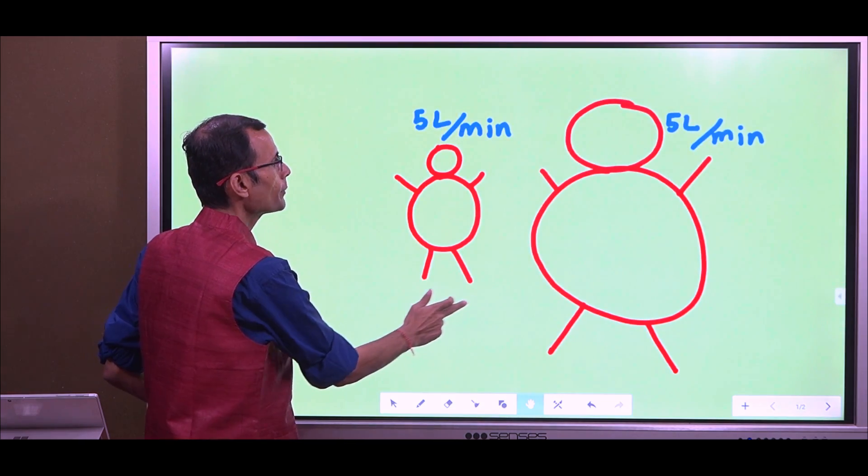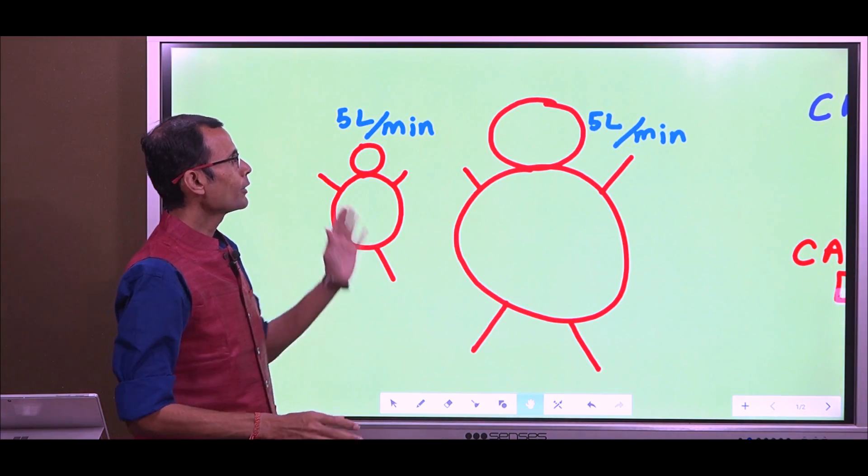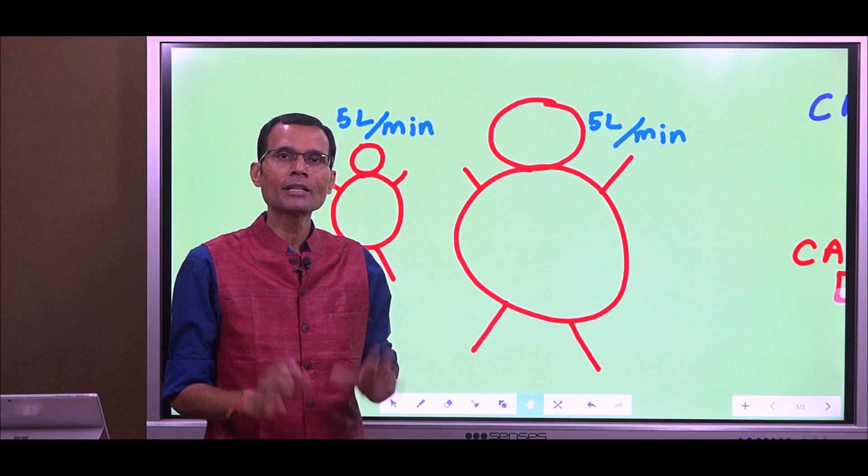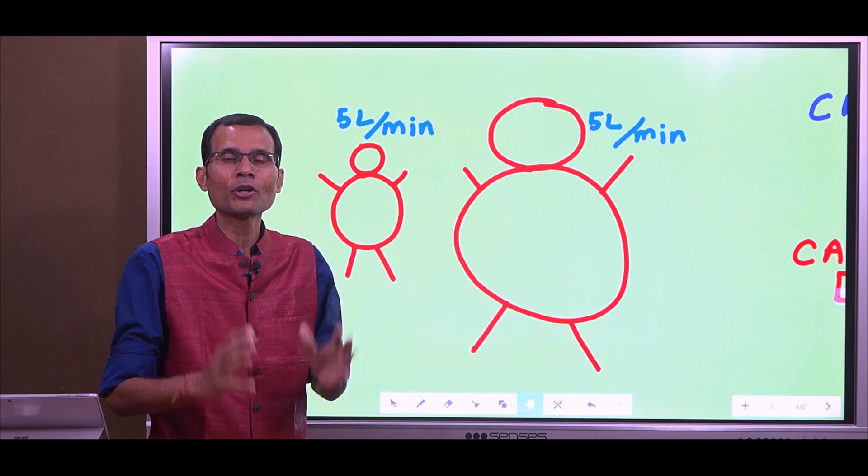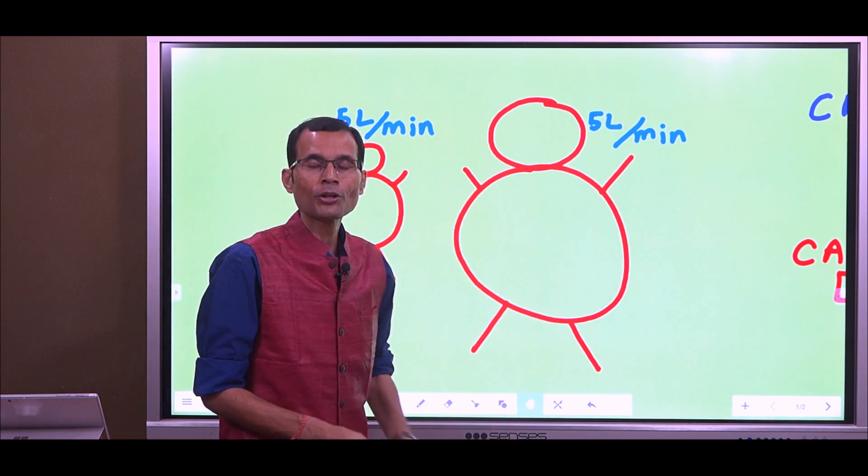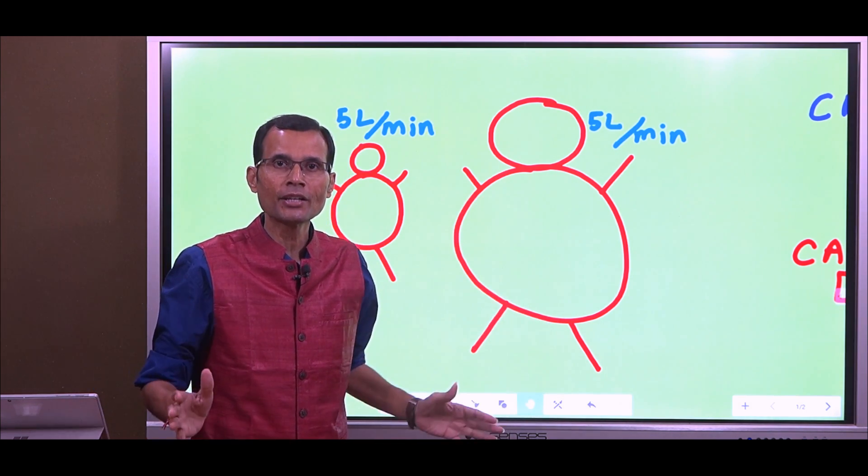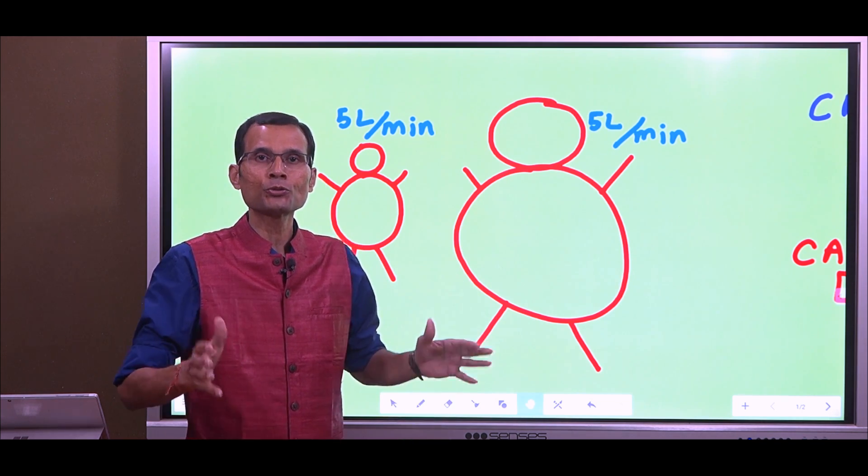Look at these two people. Both have cardiac output of 5 liters per minute. But for this individual, that 5 liters of cardiac output may not be enough because he has got a greater surface area, that means greater tissue mass.